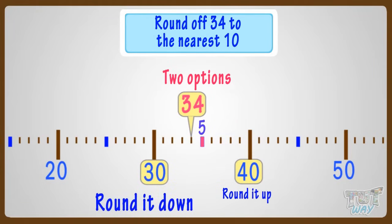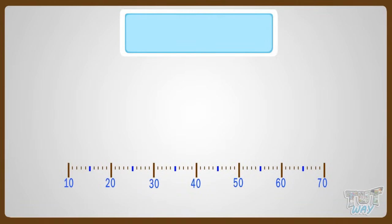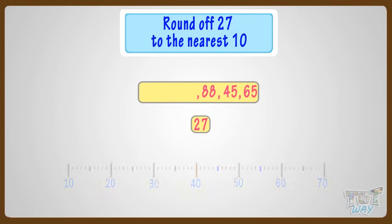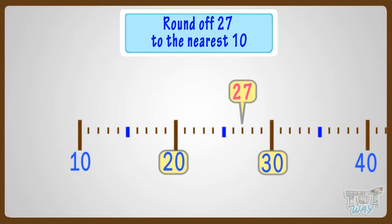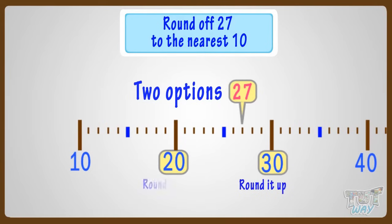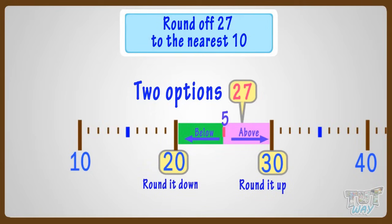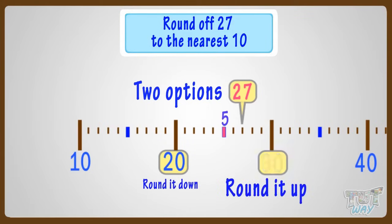Now let's take another example. Where can you fit 27 on this number line? It is somewhere between 20 and 30. Whenever we have to round a number, we have two options: round it down or round it up. Here, 27 is above the five mark, so we will round it up to 30. Good!